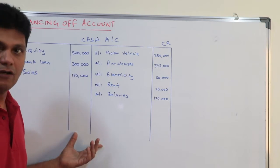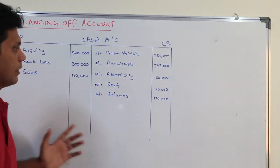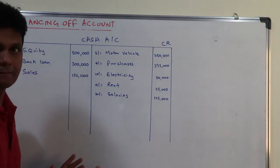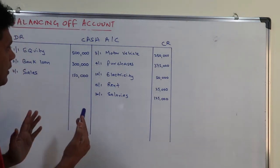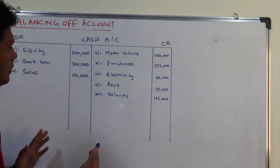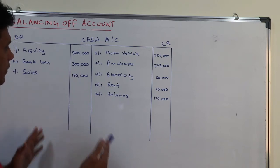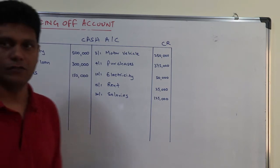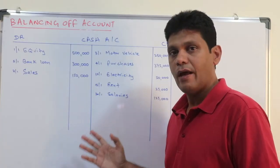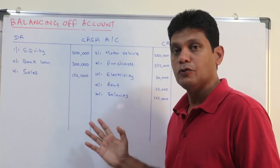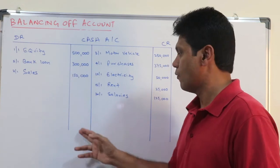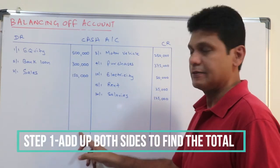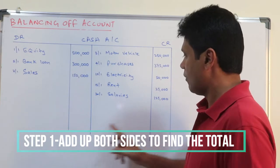This is a T account of a cash account after recording all the transactions for a particular period. Now let's look at this cash account and try to balance off this T account. In order to balance this cash account, what you should do is add up both sides — the total of both sides.